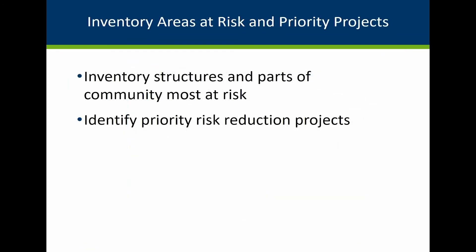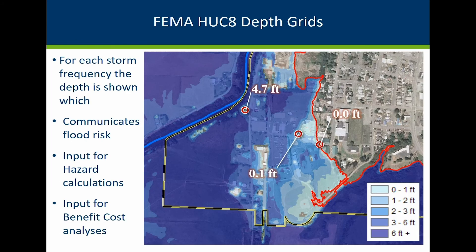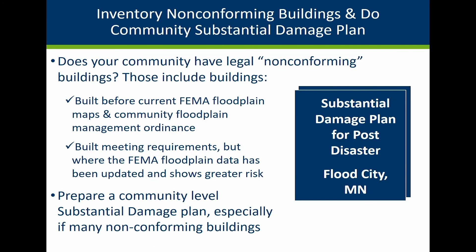Another step in preparation for disasters is to inventory structures and parts of your community most at risk and identify priority risk reduction projects. In parts of the state with more recent flood mapping and modeling, you may have depth grids available or be able to create them using available data. These allow review of what homes and businesses are most at risk or what roads need closing at different flood depths. If your community has a lot of buildings constructed before you had FEMA floodplain maps or areas where floodplain data has been updated and shows greater risk, strongly consider doing a community-level substantial damage plan for disaster response. We'll talk more about substantial damage in our second video on response and recovery roles for local officials.